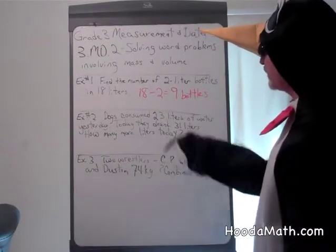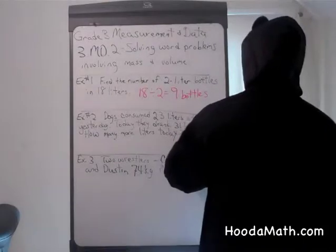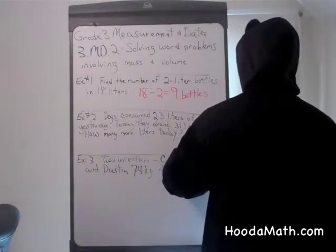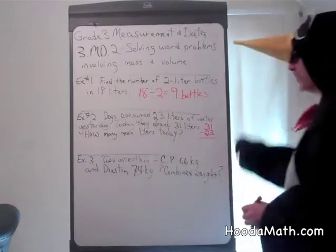When you compare two amounts, what do you do? Correct, you subtract 31 take away 23. Don't forget to regroup.